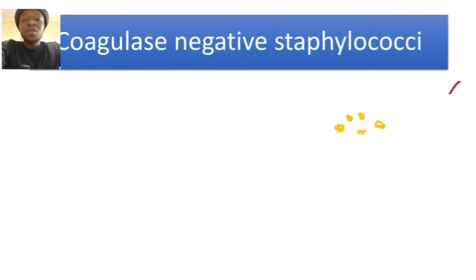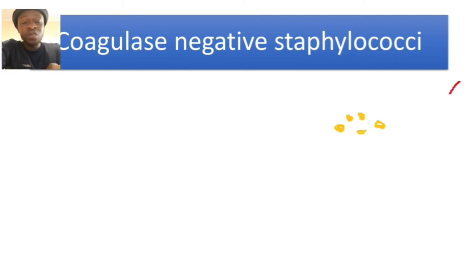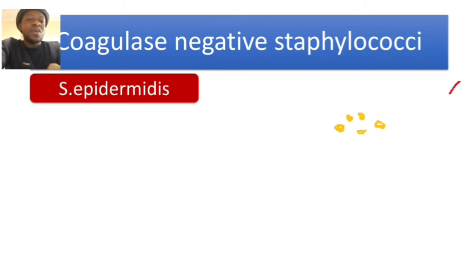In this video we are going to talk about coagulase-negative staphylococci. We are mainly talking about Staphylococcus epidermidis and Staphylococcus saprophyticus. We will start with Staphylococcus epidermidis, then talk about Staphylococcus saprophyticus, and lastly we will talk about the common features found on both organisms.